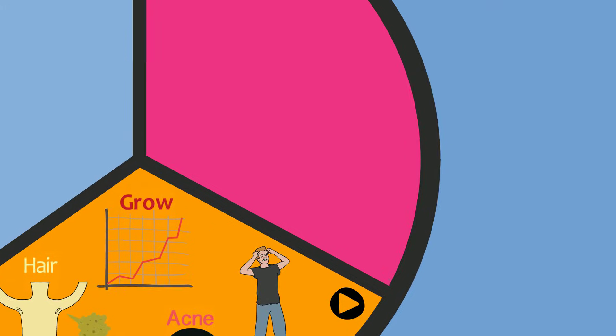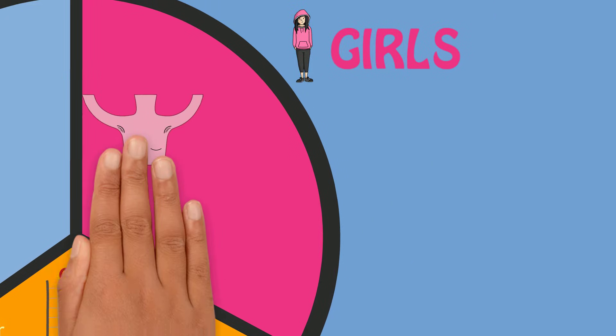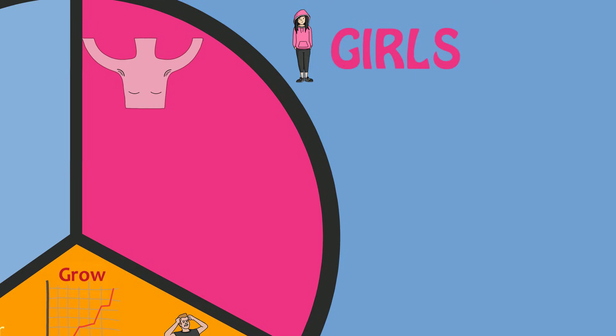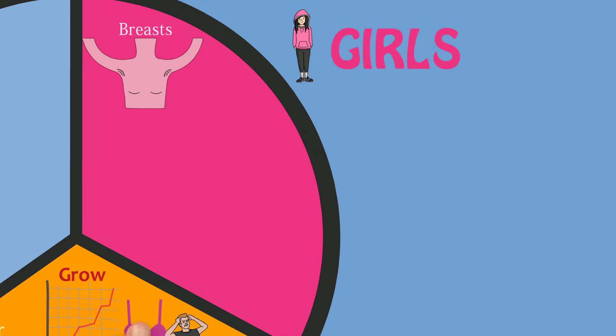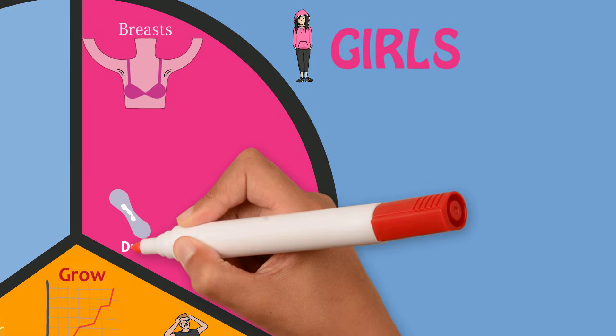Puberty also comes with unique changes that happen only in girls. First, breasts start to form and sometimes girls start wearing a bra to help with this. There also may be a thin white discharge from the vagina.